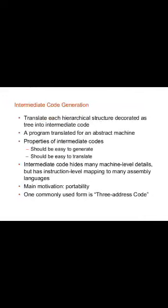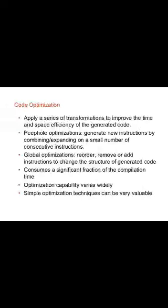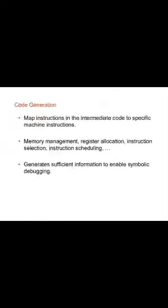A program is translated for an abstract machine. Properties of intermediate code: it should be easy to generate and easy to translate. Intermediate code hides many machine-level details but has instruction-level mapping to many assembly languages. It is used for three-address code generation. Code optimization reduces the size of the code — it applies a series of transformations to improve the time and space efficiency of the generated code. Peephole optimization generates new instructions by combining a small number of consecutive instructions.